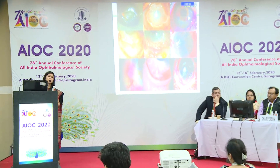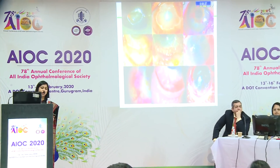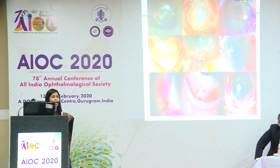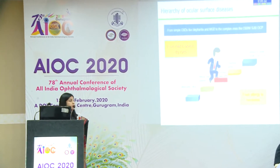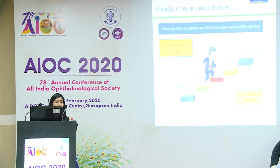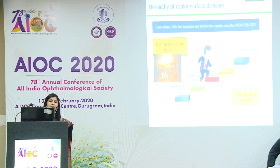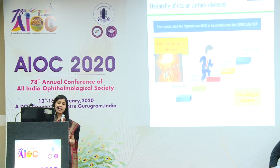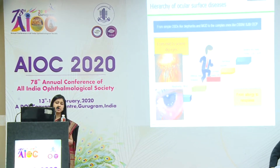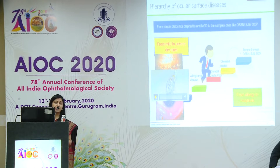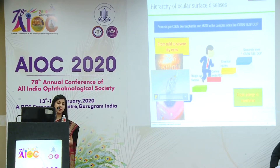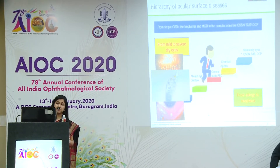When we talk about ocular surface diseases, we know it's like a vast, vast ocean. There's a whole hierarchy of ocular surface diseases, which includes the very basic ones, starting from blepharitis, meibomian gland disease, and also demodex these days, which is really causing havoc and dealing with them is becoming an issue at times.